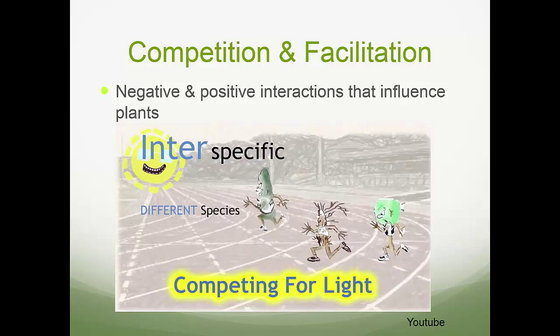When we think about a community or an individual, we have to think about both the positive and negative interactions that influence plants. We can think of this as competition and facilitation. Competition involves negative interactions, whereas facilitation involves positive interactions. This figure shows different species in interspecific competition, competing for light.